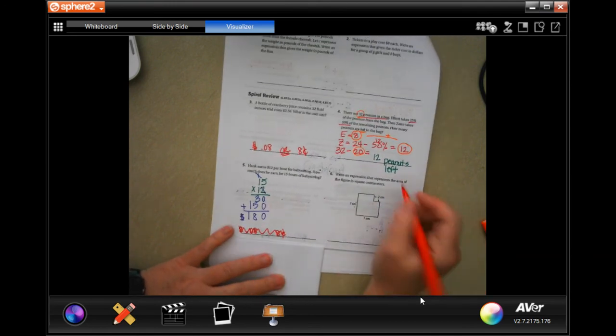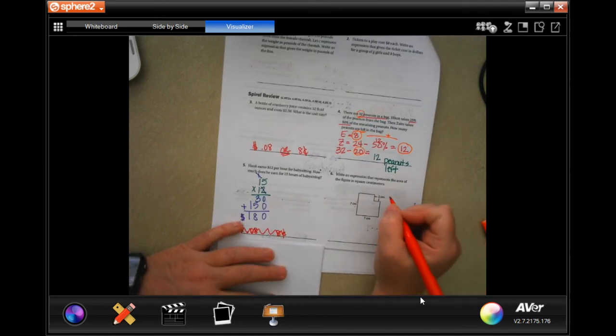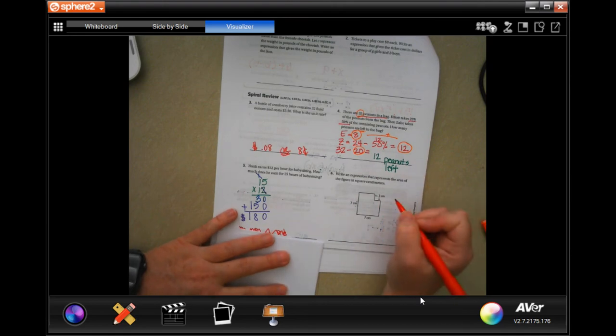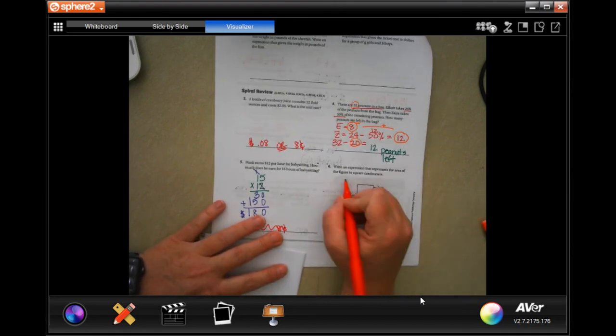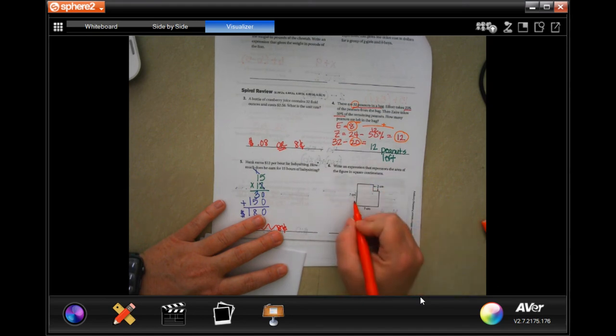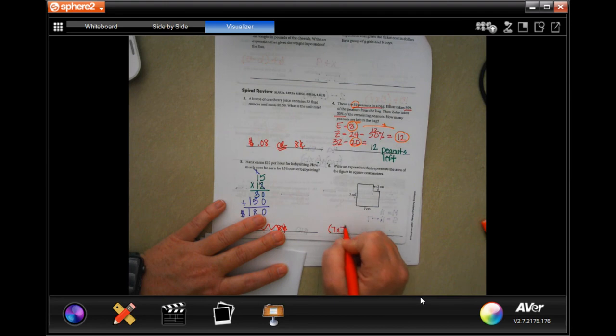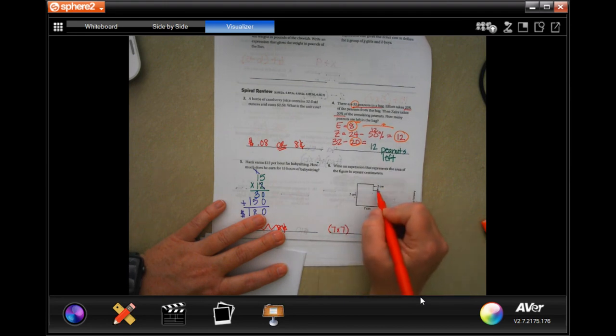Write an expression that represents the area of the figure in square centimeters. So I would do area we know is length times width. Well, length is seven and width is seven. So we're going to have seven times seven, but then we have a two by two square that's missing minus two by two.